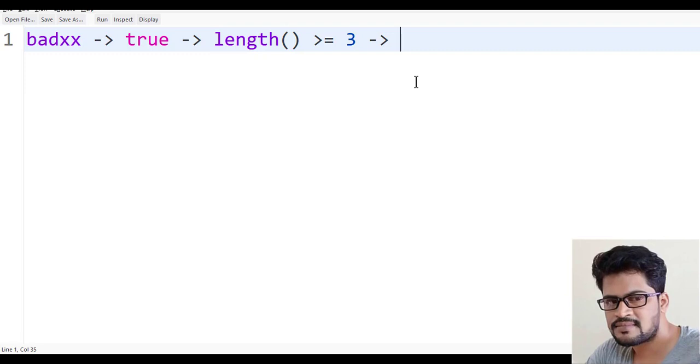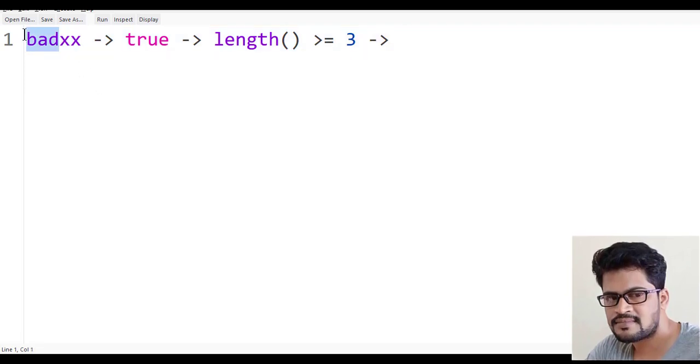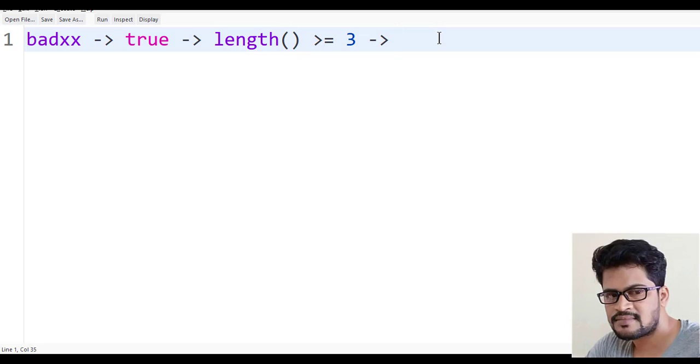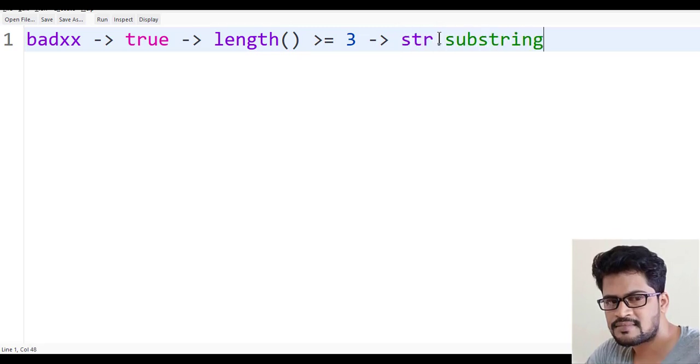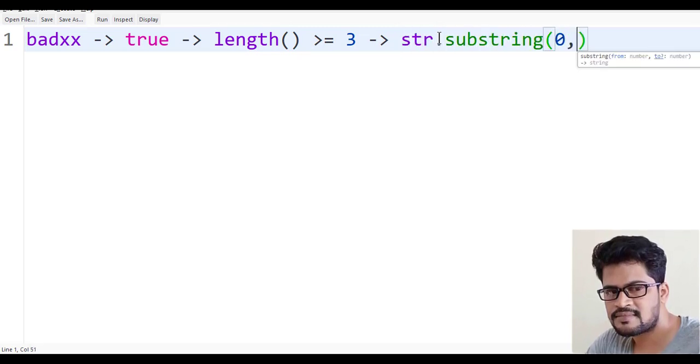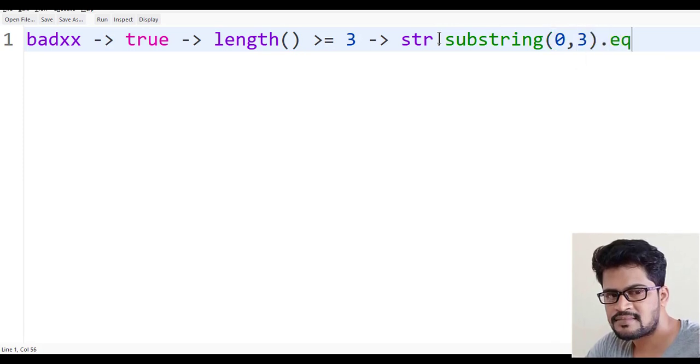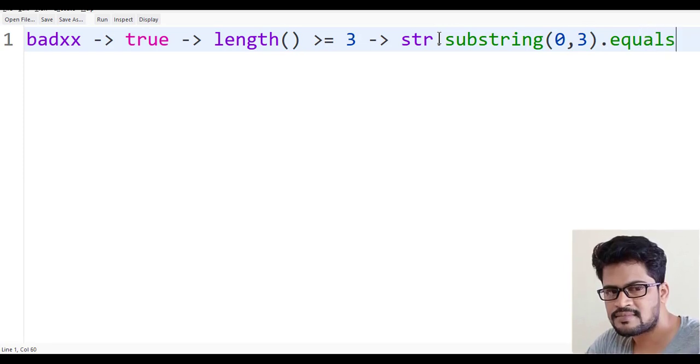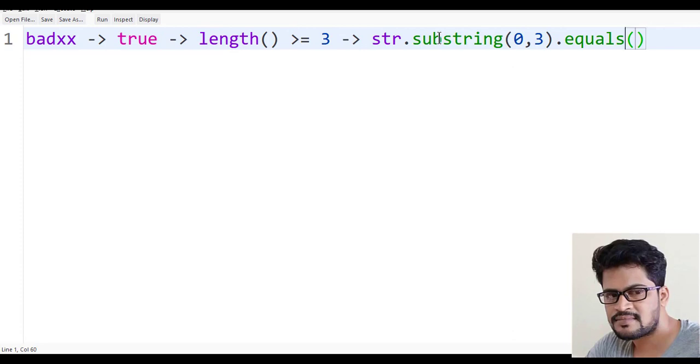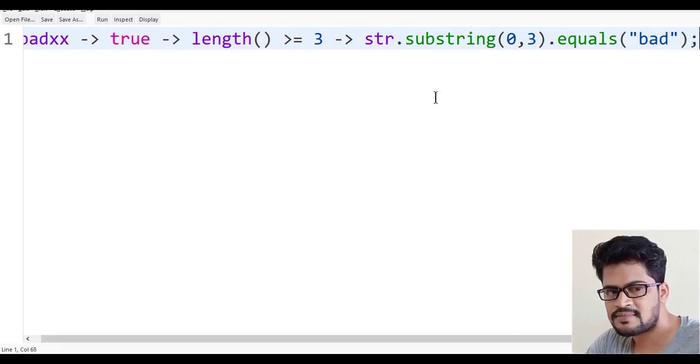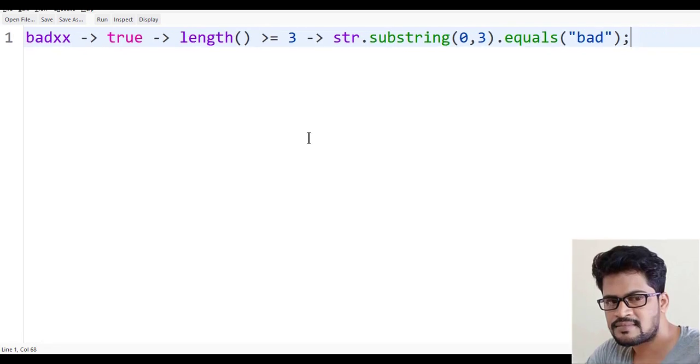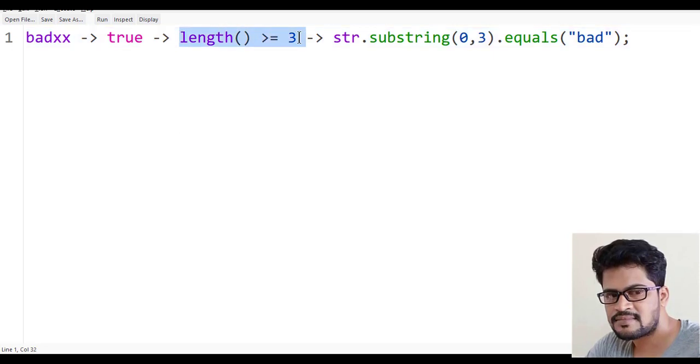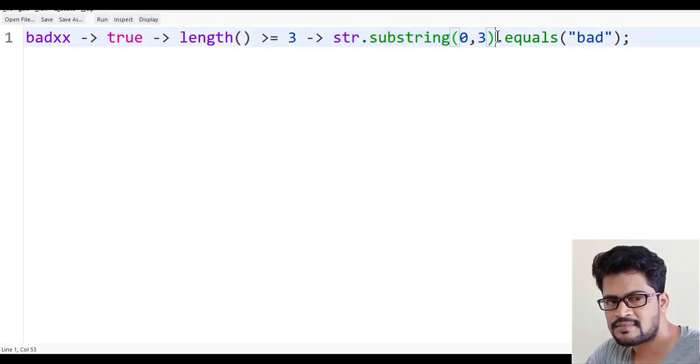How to find if the first three characters are 'bad'? Simple: str.substring(0, 3).equals("bad"). So our first logic is: if length is greater than or equal to 3, then check if str.substring(0, 3) equals 'bad'.